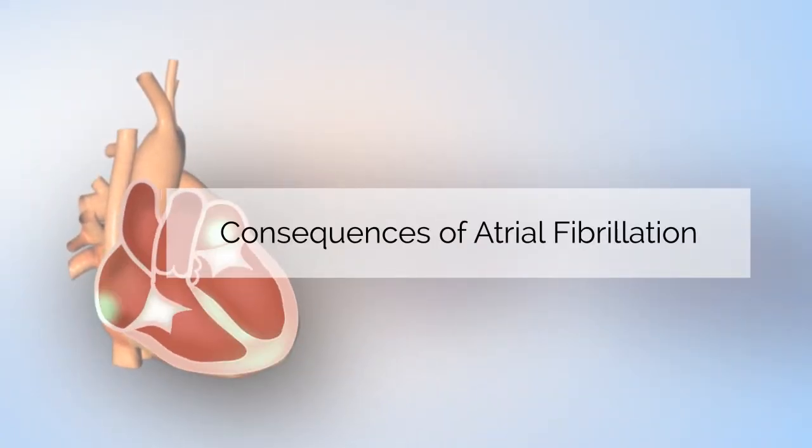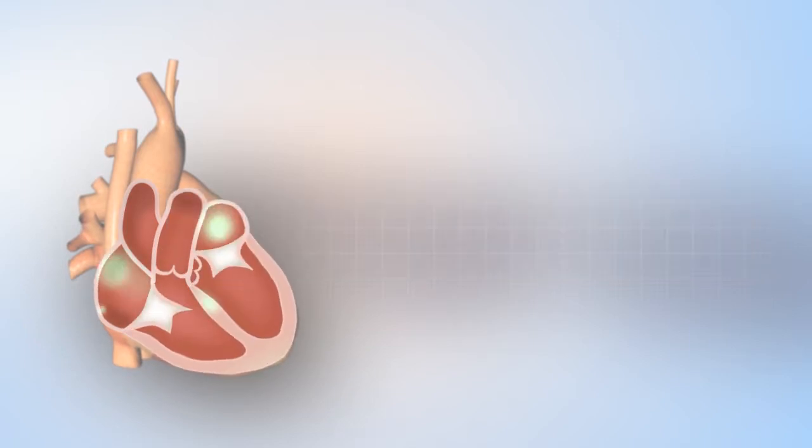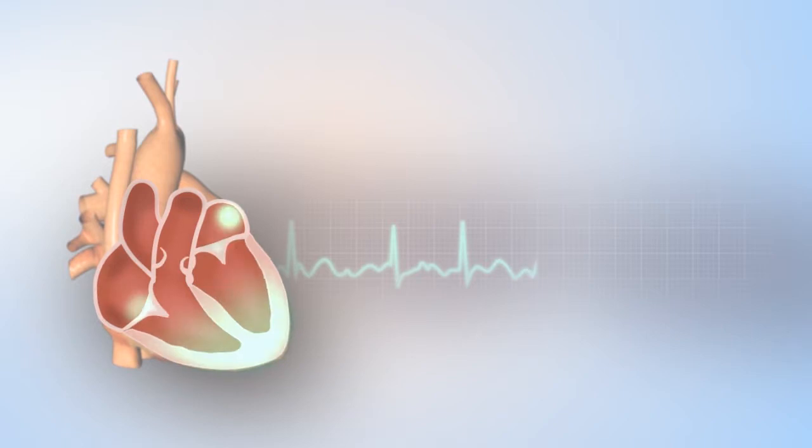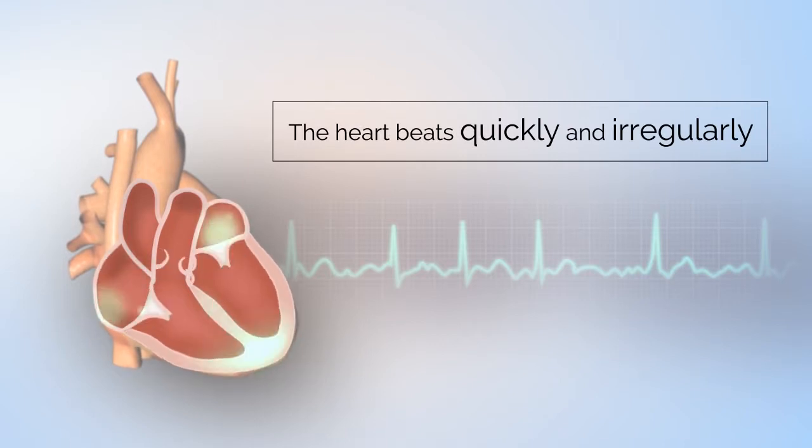There are two main consequences of atrial fibrillation. Firstly, because of the disorganized electrical activity, the top chambers send many signals to the bottom chambers, causing the heart to beat quickly and irregularly.